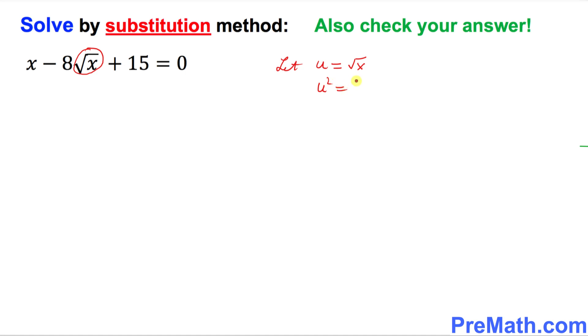So u squared equals square root of x and then square. Simply u squared turns out to be, this square and square root undo each other, we got u squared equal to x. So we got u squared equal to x and u equal to square root of x.